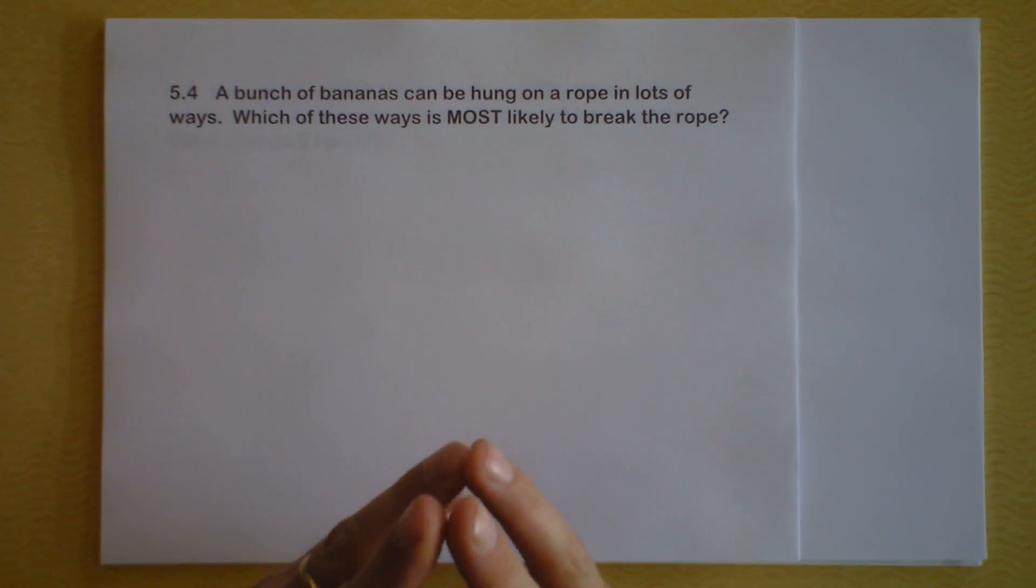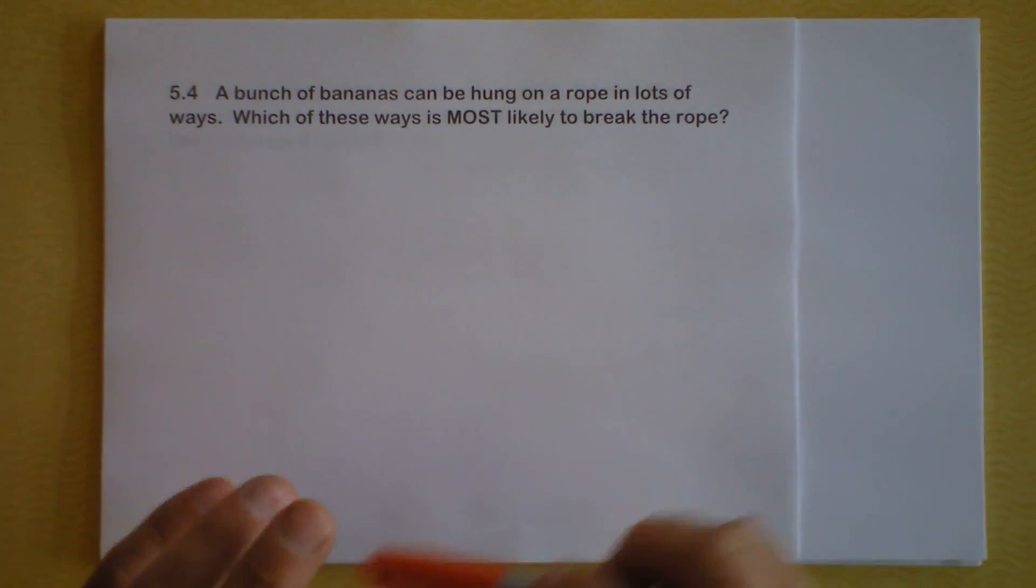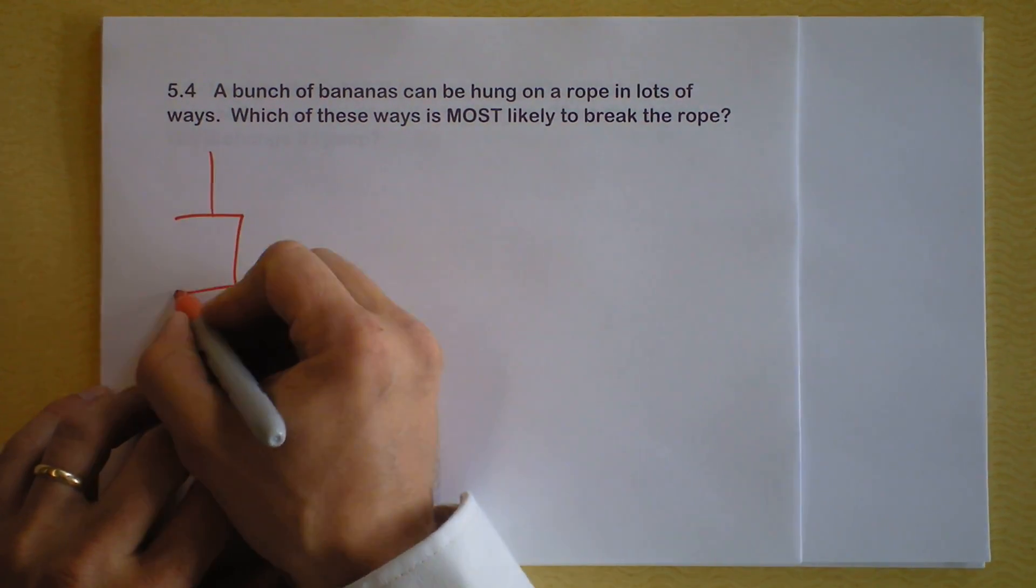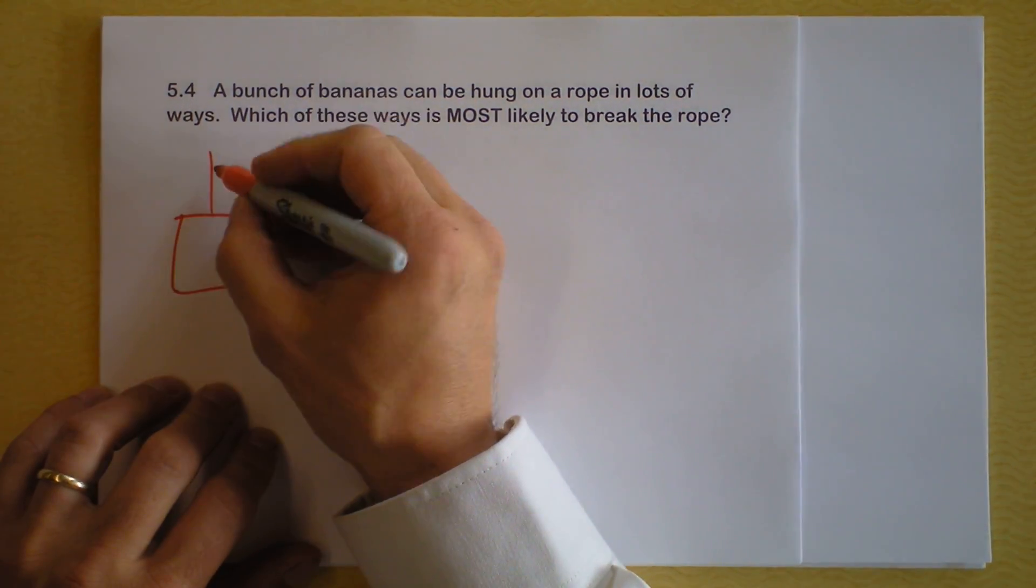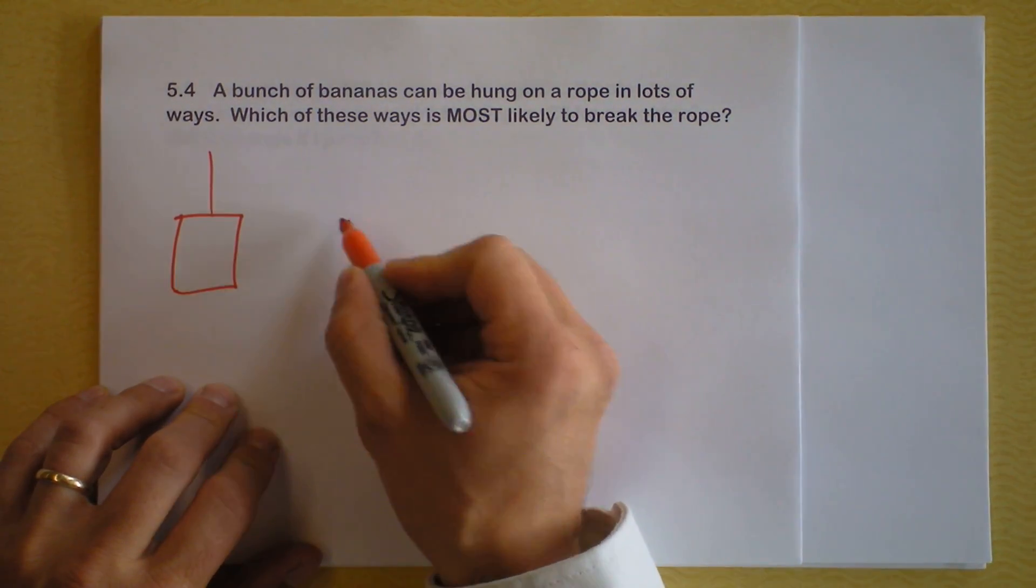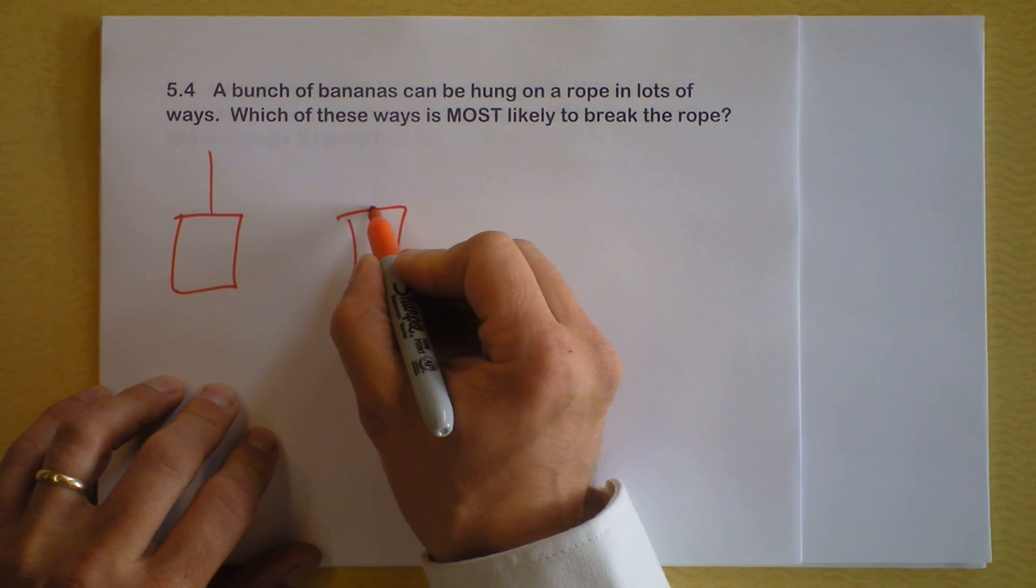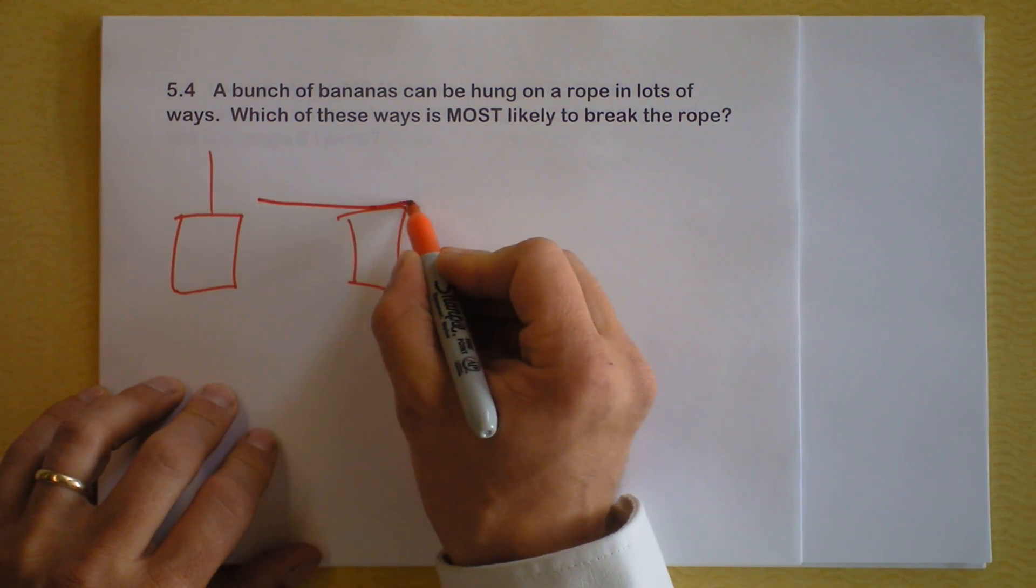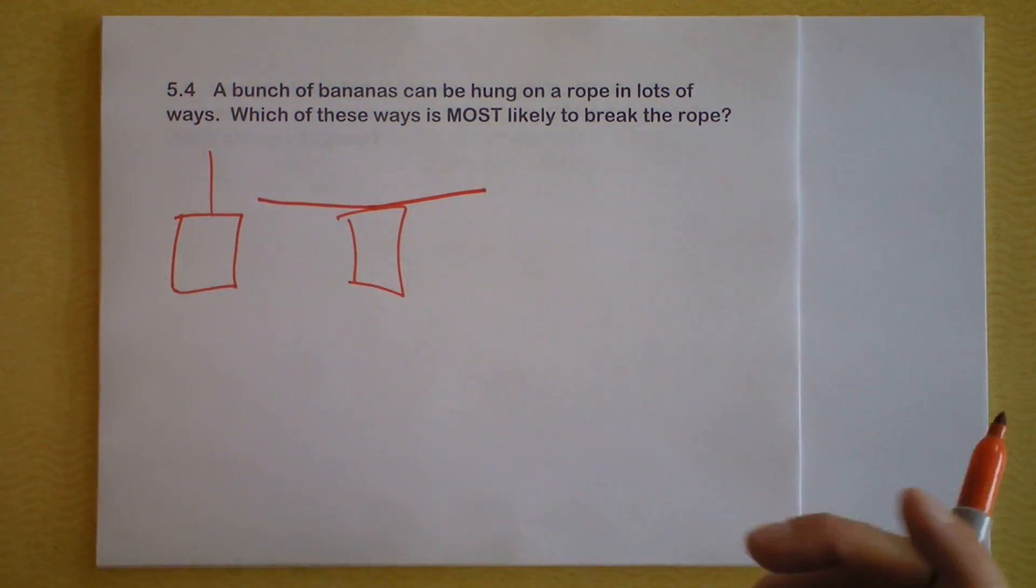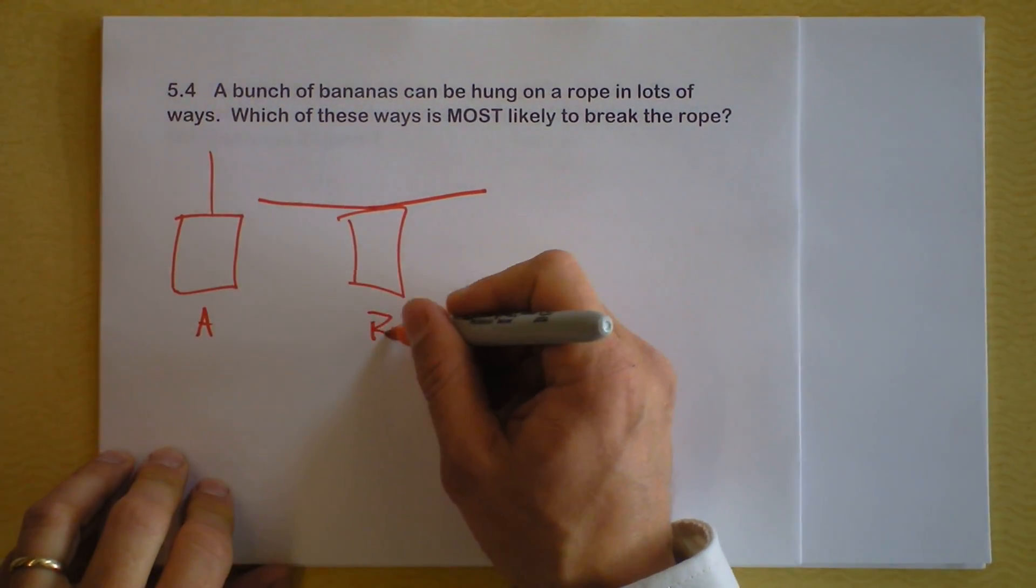Problem four is about bananas, but I'm going to draw the problem for you. There's one option under which the bananas, which of course look like that, are hanging from a single rope right here. And the other option is that the bananas, which still look just like a box, are hanging from a rope like this. You stretch a rope out really tight and then dangle the bananas from the middle of it, so I'll call this A and this B.